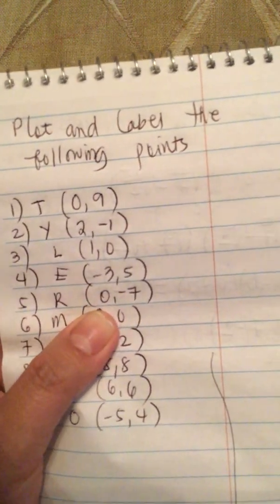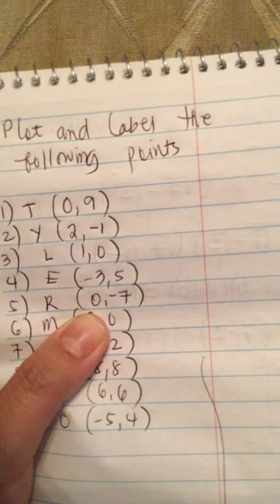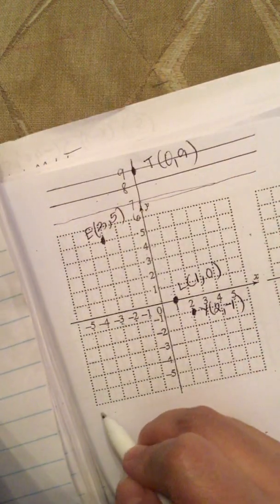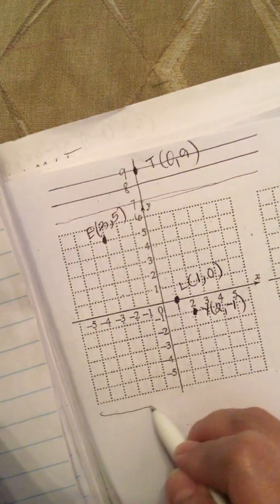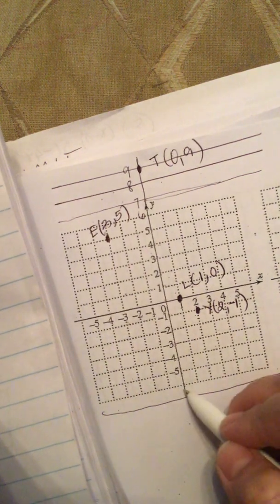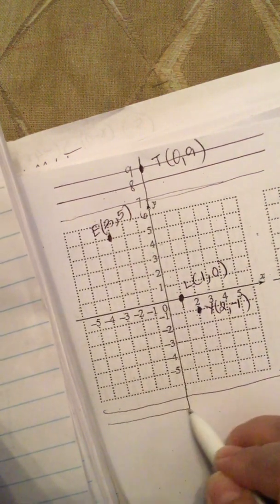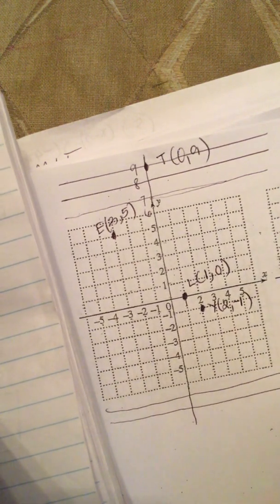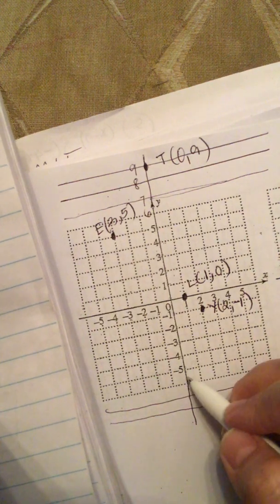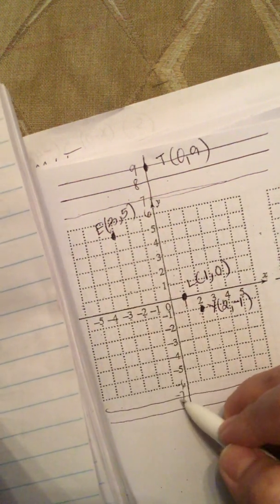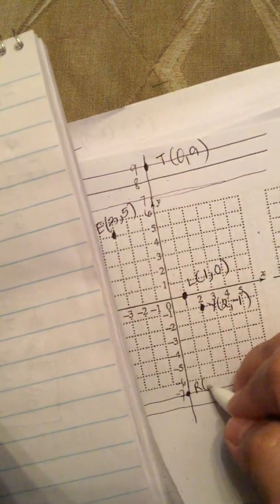Next one is zero comma negative seven. We need more squares here. Five, negative six, negative seven — so this is the point zero comma negative seven.